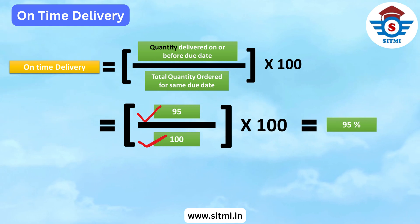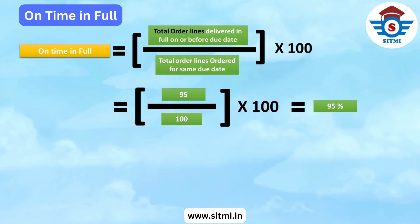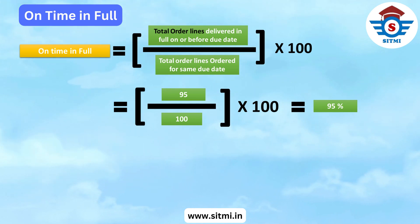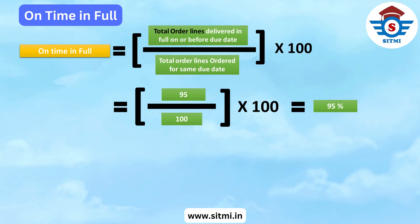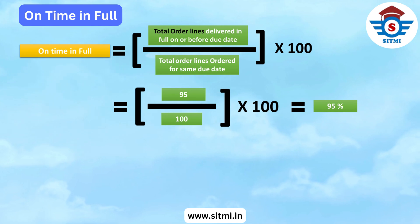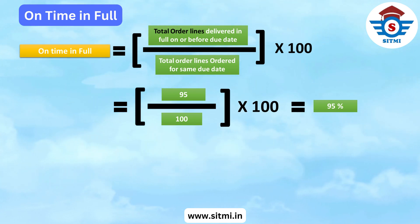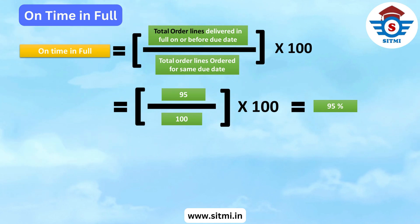The next key performance indicator is On Time In Full, also referred to as OTIF. The formula for OTIF is: total order lines delivered in full on or before due date, divided by total order lines ordered for that particular due date, multiplied by 100. For example, if a customer ordered 100 order lines for a particular due date but we could only deliver 95 order lines on or before that date, then OTIF is 95%.